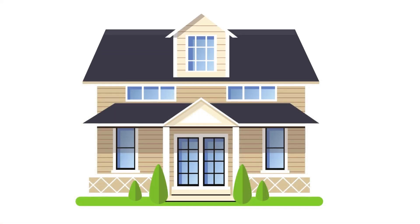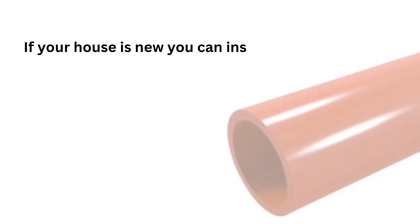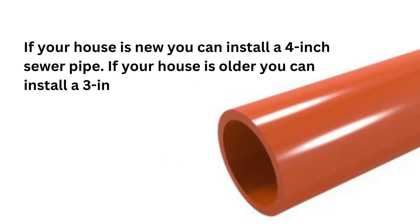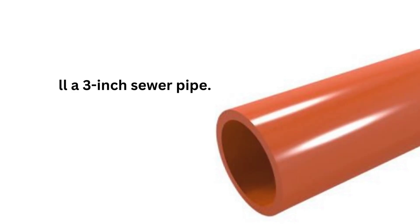If your house is new, you can install a 4-inch sewer pipe. If your house is older, you can install a 3-inch sewer pipe.